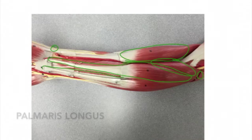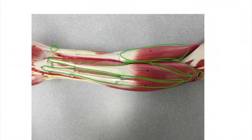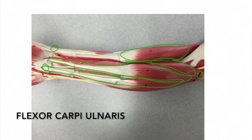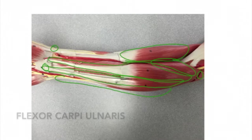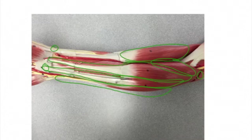Next to the flexor carpi radialis is the palmaris longus. This muscle stops at the palm. The origin is the medial epicondyle of the humerus, and the insertion is the palmar aponeurosis. The action is to flex the wrist. We can also see the flexor carpi ulnaris, which originates from the medial epicondyle of the humerus and the olecranon process of the ulna, and inserts to the pisiform, hamate, and the fifth metacarpal. The action is to flex the wrist and assist in adducting the hand.